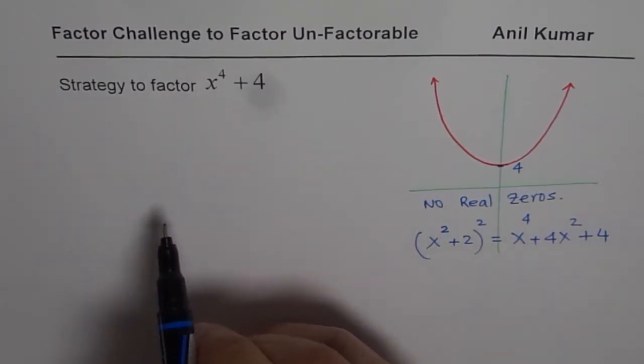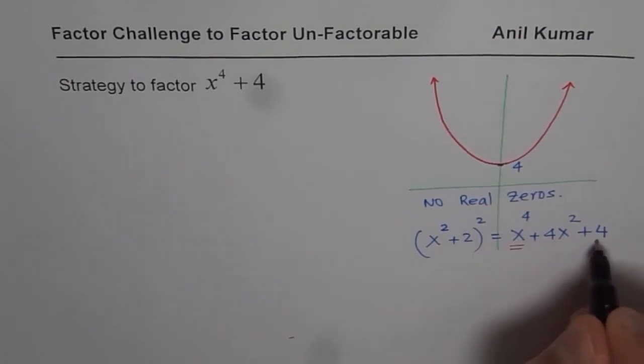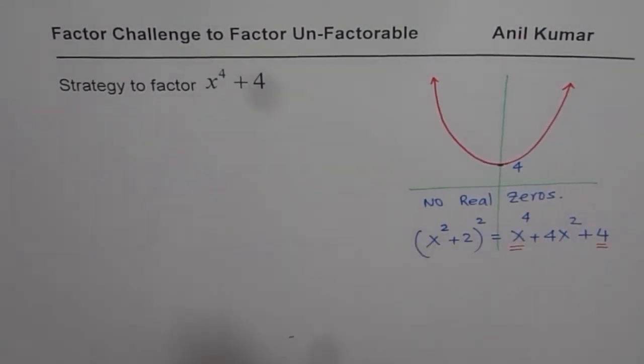What do we have here? We have x to the power of 4 and 4 in the given expression. What we are missing is 4x square. That gives you an idea.